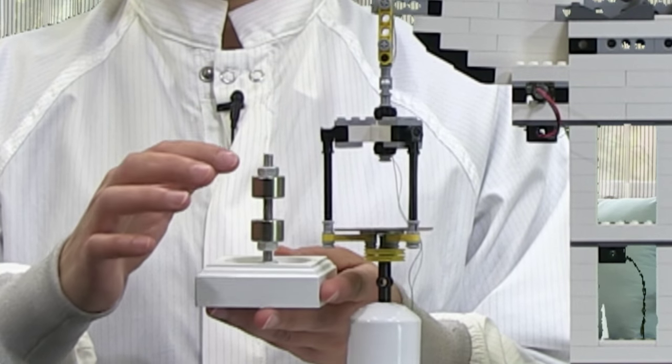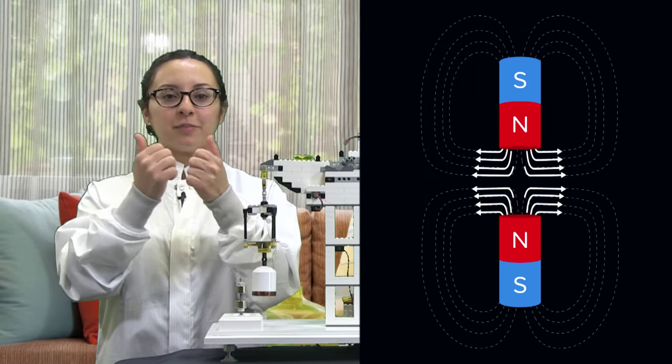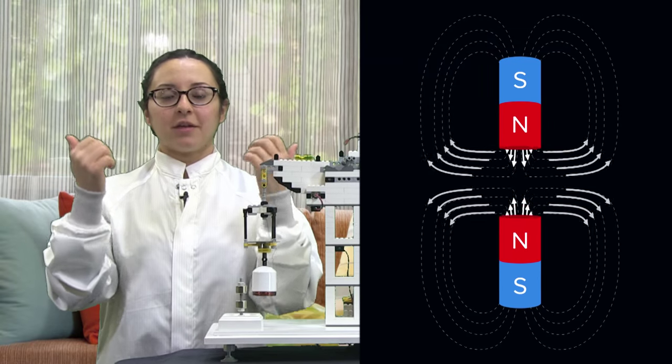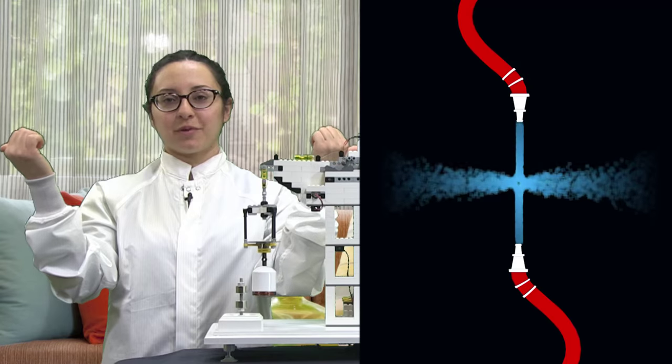Their magnetic fields collide and spill outwards in all directions. This is very similar to the effect you see when two fire hoses are directed against each other, creating a radial spray of water.